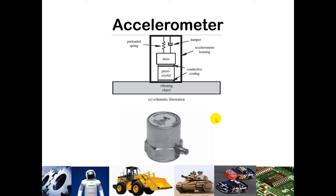Here you can see the piezoelectric crystal inside the accelerometer with a mass sitting on top and a spring to keep things damped so it doesn't bounce around too much. As you accelerate upward, the mass compresses down on the piezo crystal; as you accelerate downward, the mass is pulled by the spring and compresses the crystal less. Accelerometers can be larger or quite small.